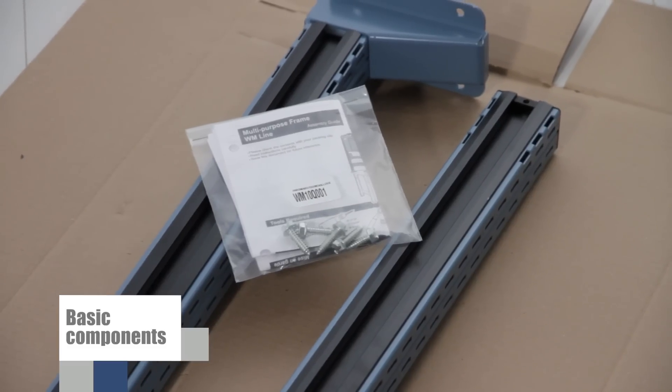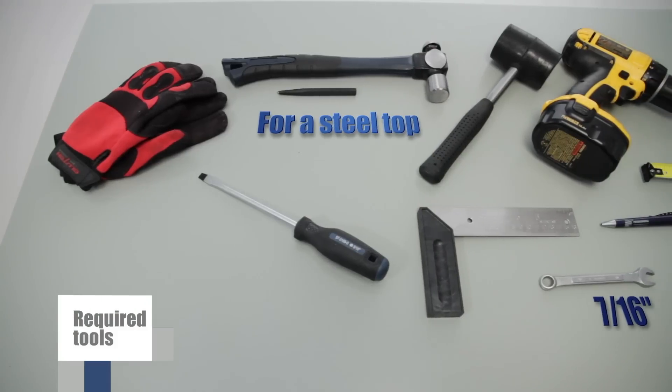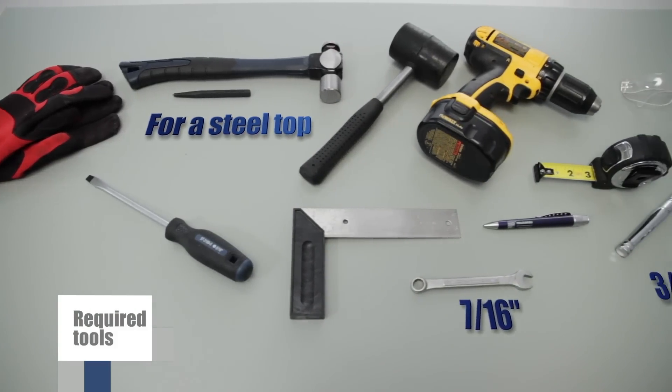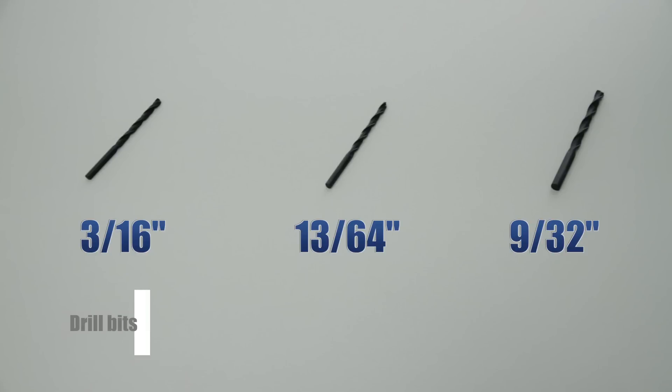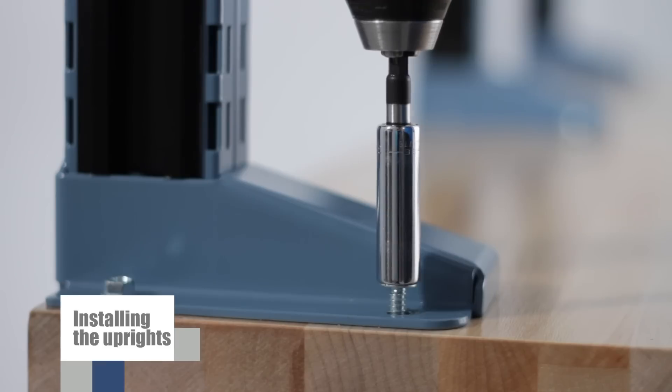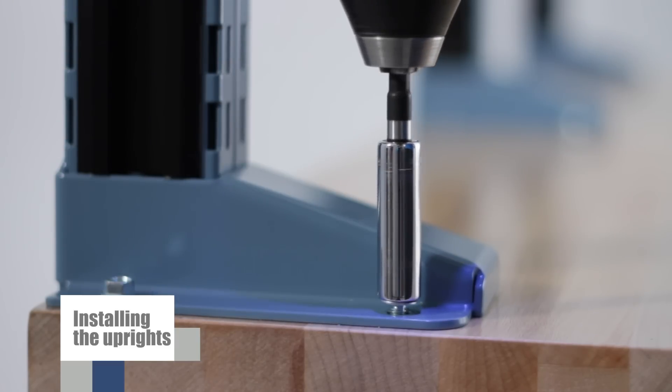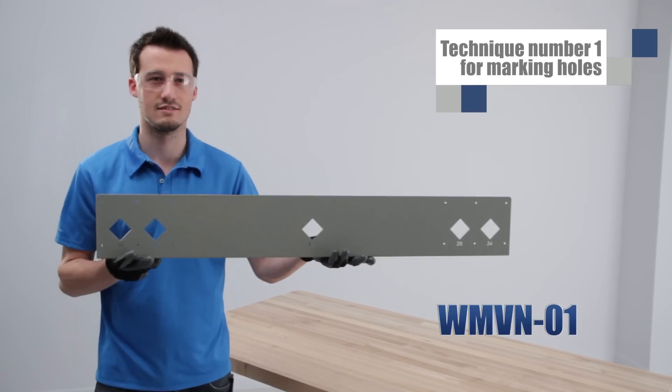The assembly guide and the bag of hardware can be found in the same box as the frame uprights. Here are the tools that you will need depending on the type of work surface you have. The first step is to assemble the uprights to the work surface. Correctly drilling the work surface is critical to being able to easily assemble the other components.